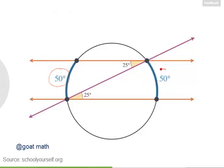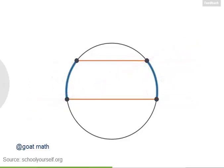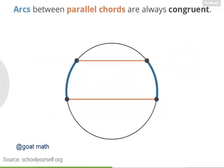So both of these arcs have the same measure. And this is true in general. If the measure of this angle is x, then this angle must also have measure x, because they're alternate interior angles. And that means both arcs measure 2x. So we've proven that arcs between parallel chords are always congruent, meaning they always have the same measure.